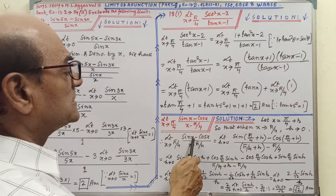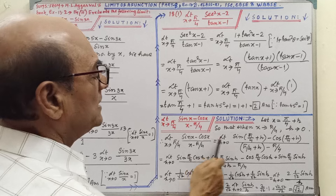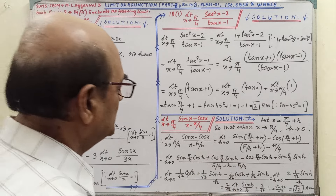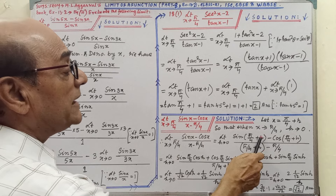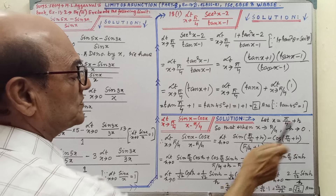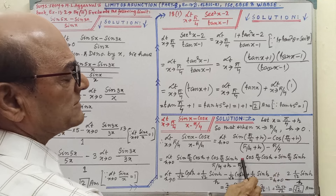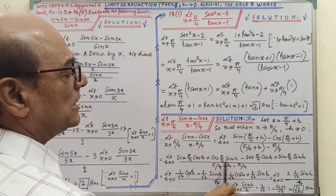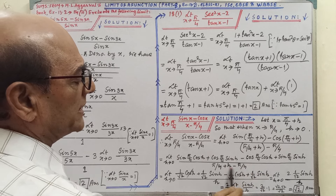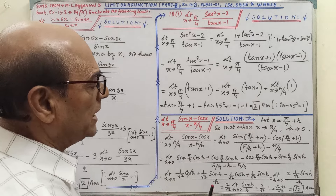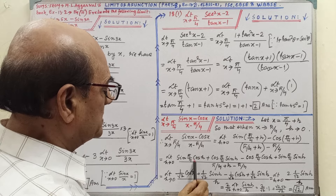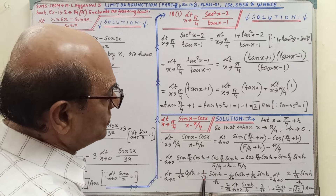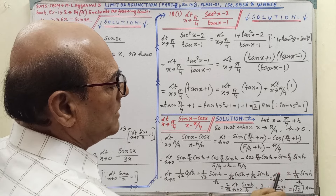Now, in place of x we are writing pi by 4 plus h. So sin x becomes sin(pi/4 + h) and cos x becomes cos(pi/4 + h). Now applying the compound angle formula: sin(A+B) = sin A cos B + cos A sin B, and cos(A+B) = cos A cos B − sin A sin B. By applying the compound angle formula we get this expression, and after removing the brackets we get the simplified expression. Observing, sin(pi/4) = 1/√2 and cos(pi/4) = 1/√2, so these values are both 1/√2. The pi/4 minus pi/4 terms in the denominator cancel, leaving h.